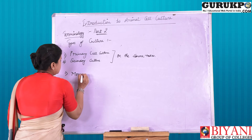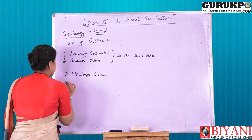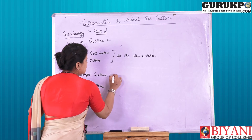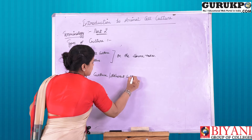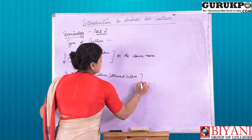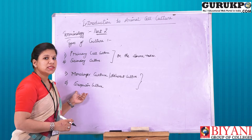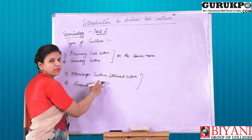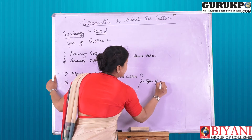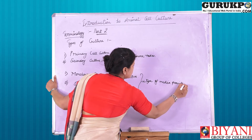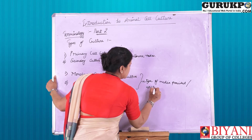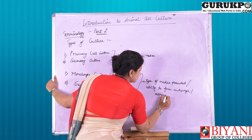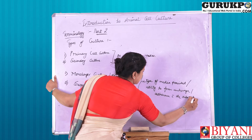The next categorization of culture types includes first monolayer culture and second suspension culture. Monolayer culture is also known as adherent culture. This characterization is based on the capacity of the cells to form anchorage on the substratum provided, or based on the type of media provided.